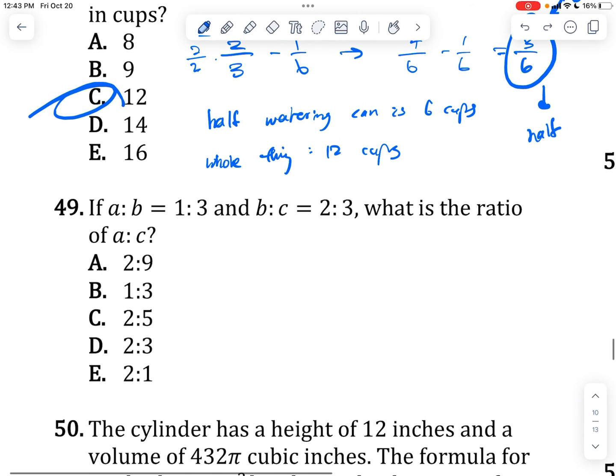If a to b equals 1 to 3, b to c equals 2 to 3, what is the ratio of a to c? Think of this as fractions. So a over b is equal to 1 over 3. b over c is equal to 2 over 3. So what is a over c?